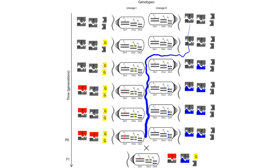In sum, the Dobzhansky-Muller incompatibility model suggests a process by which two incompatible alleles can arise by random mutation and not cause the original lineages to be unhealthy, but that can produce unhealthy hybrids that prevent populations from producing viable and fertile offspring. That is, such a process can explain how genetic mutations can cause hybrid inviability or hybrid sterility, and thus cause two populations of an organism to become two biological species.